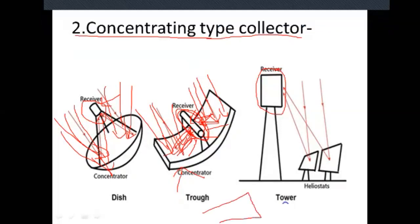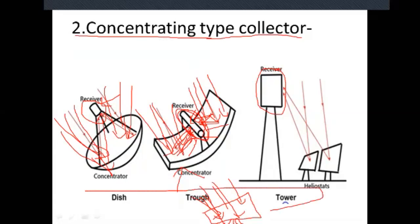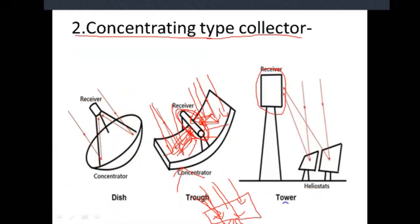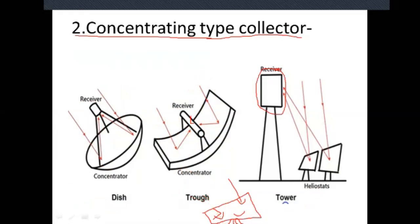As the sun moves, the position of the collector is also moved, and that is why we are getting maximum number of radiations throughout the day. In the case of flat plate collector, it is fixed at one place and no tracking mechanism is used. So for the flat plate collector, total radiations are received only at a particular time period, whereas the concentrating type collector gives higher efficiency throughout the day.